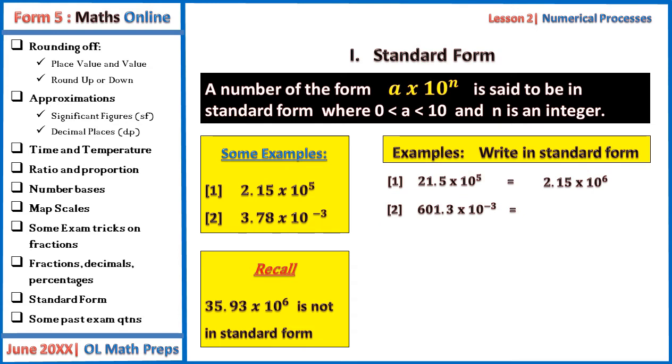Equally, 601.3 times 10 to the power minus 3 is equal to 6.013 times 10 to the power minus 1. There are 2 decimal places movements, or there are 2 movements to the left. When you move to the left, it means you are multiplying by 10 to a positive power.